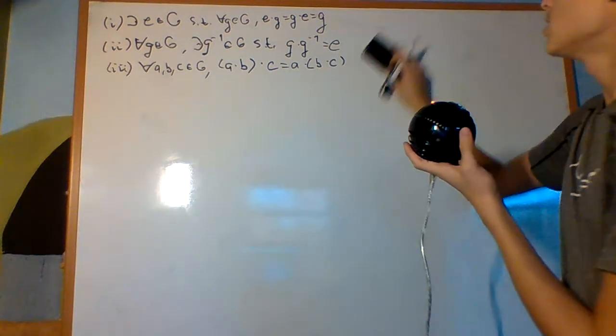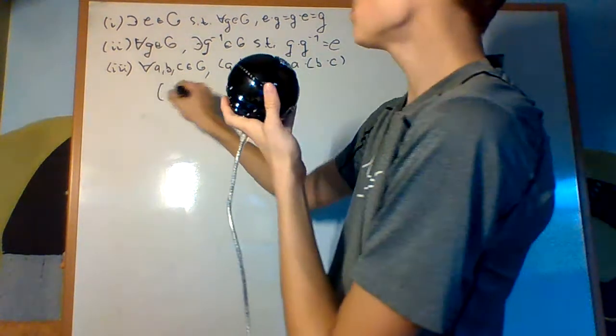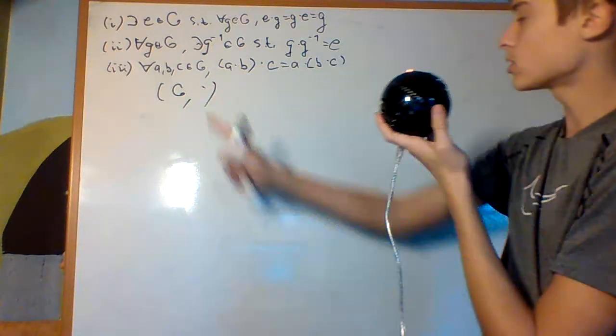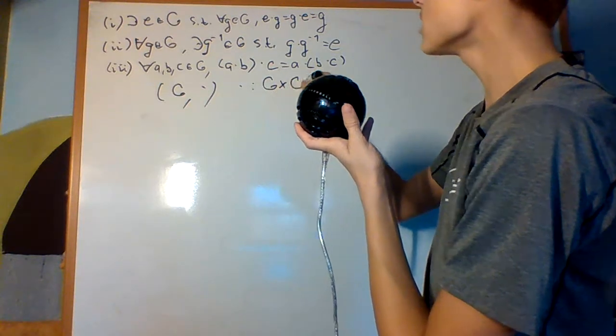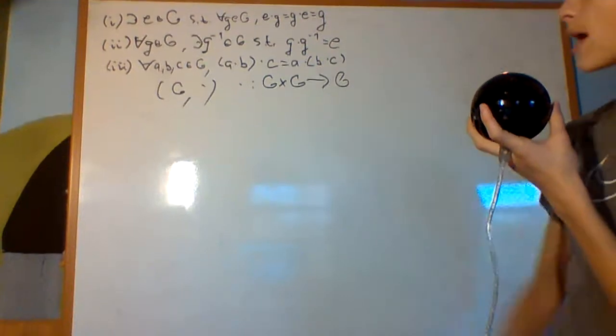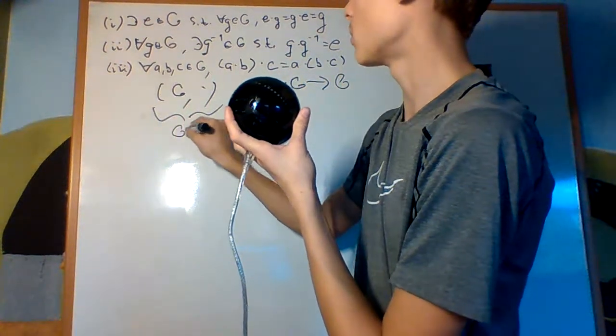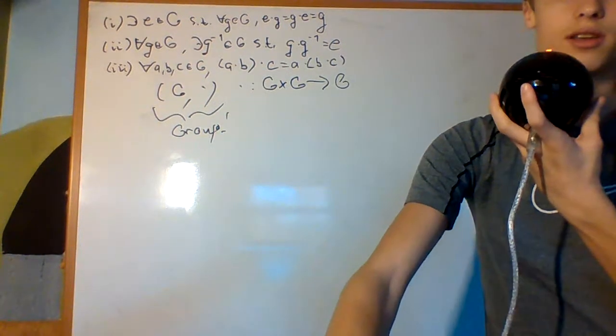And so, if we have a group, a set G, and a multiplication, a binary operation that takes in two elements of G and outputs another element, and it has all of these properties, we say G under this multiplication is a group. And we're done.